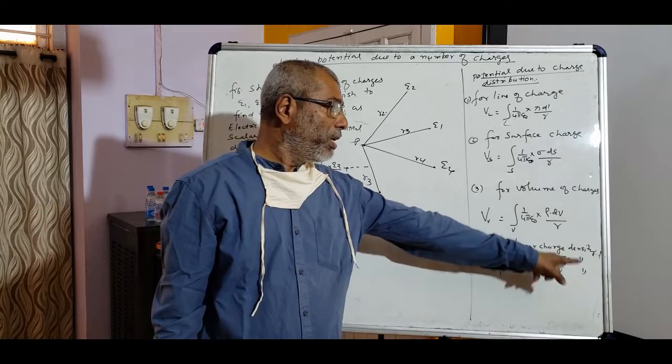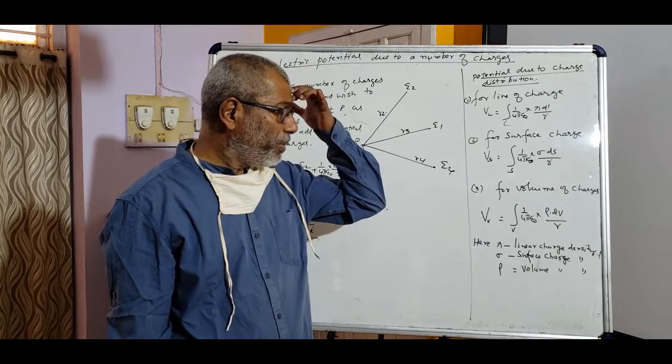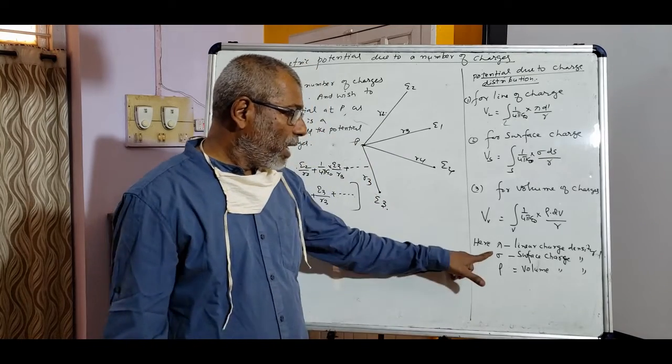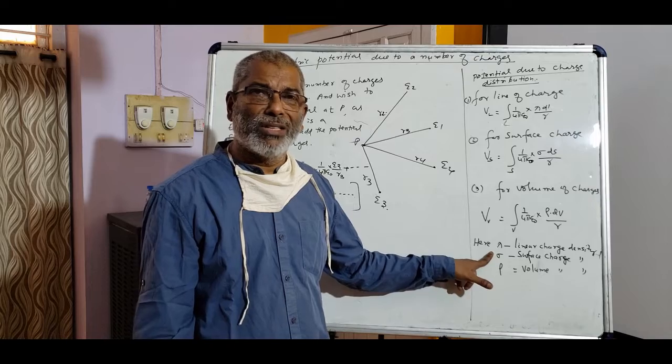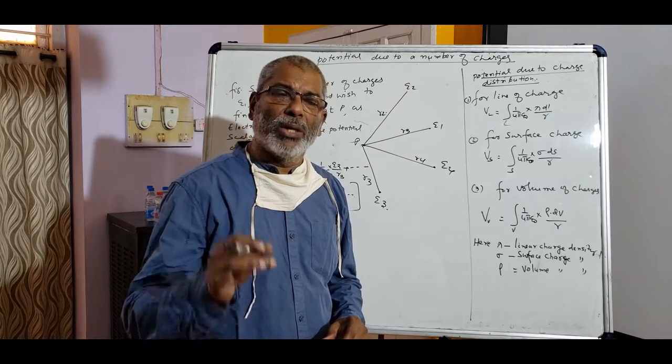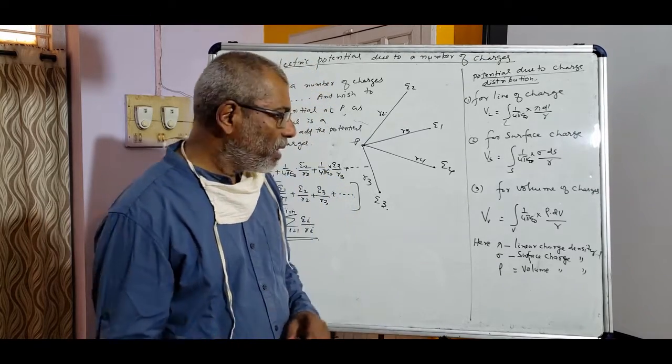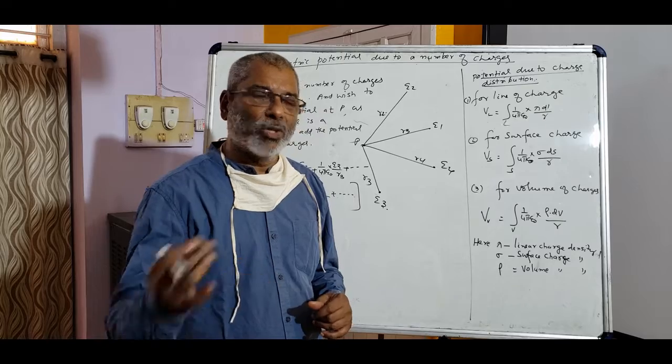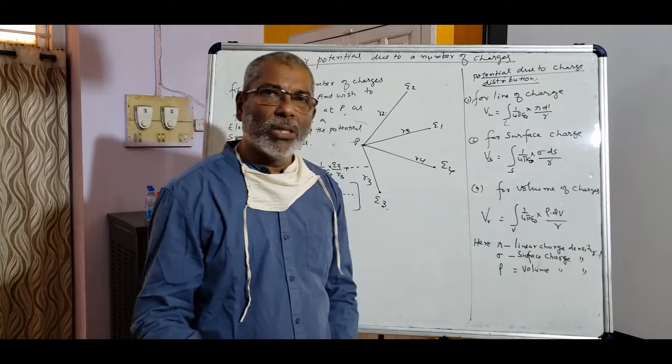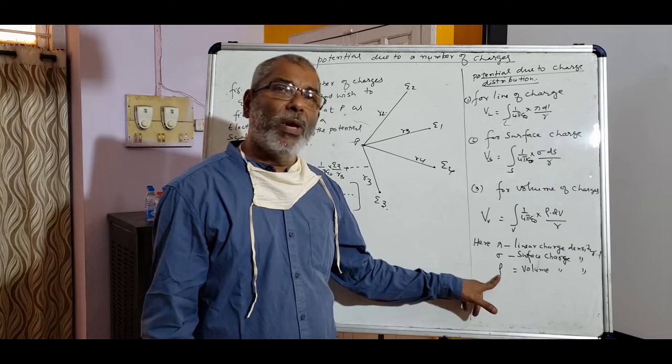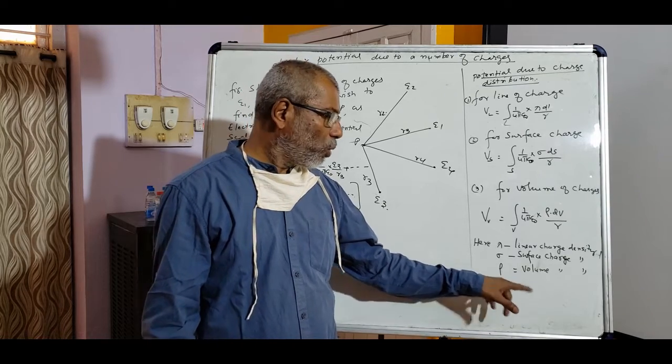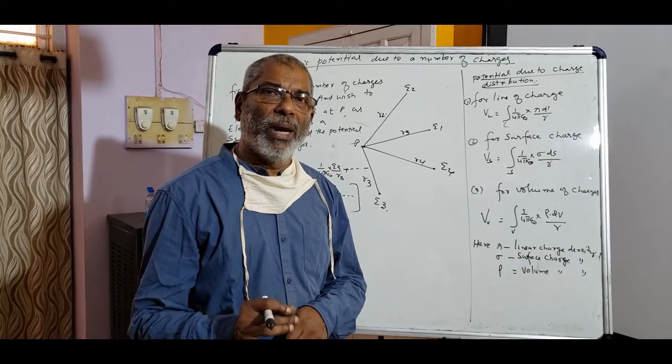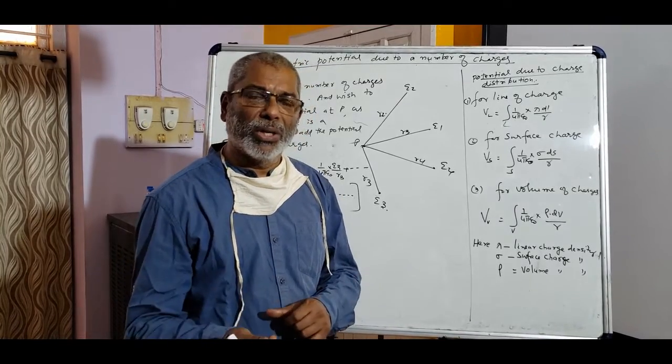Here, lambda is equal to linear charge density. Linear charge density means q divided by total length, total charge by total length. And sigma is surface charge density. Surface charge density means total charge q divided by total area, q by s. The unit is coulombs per meter square. In this case, the unit is coulomb per meter. And the last one is volume charge density, rho is equal to volume charge density. That is given by charge per meter cube, coulomb per meter cube.